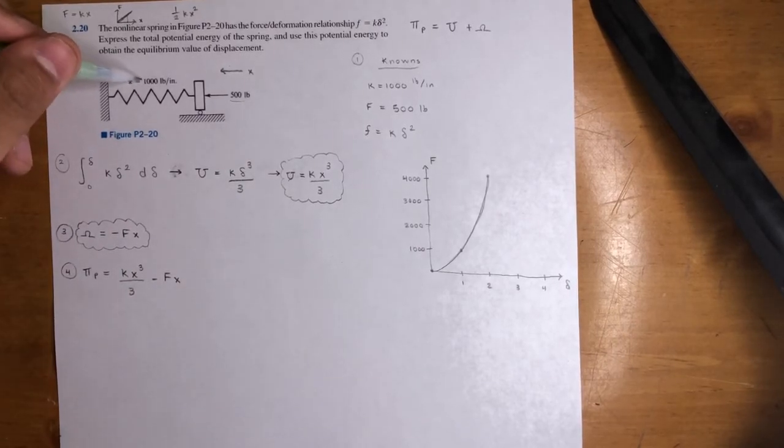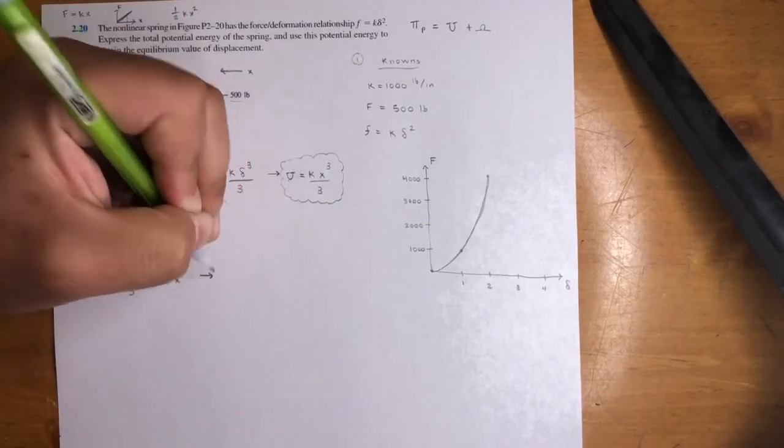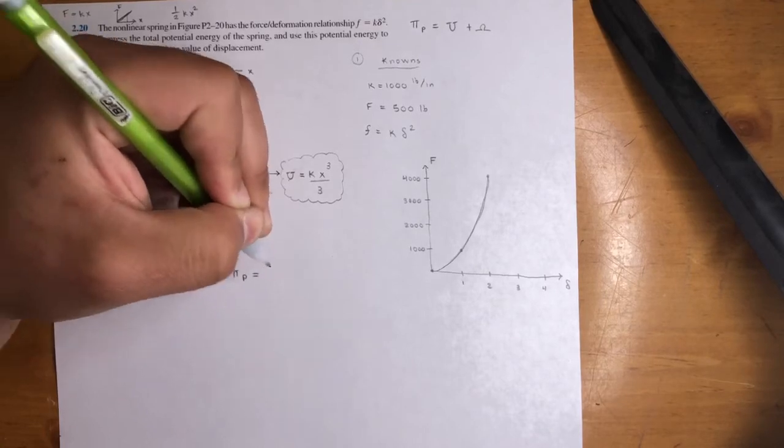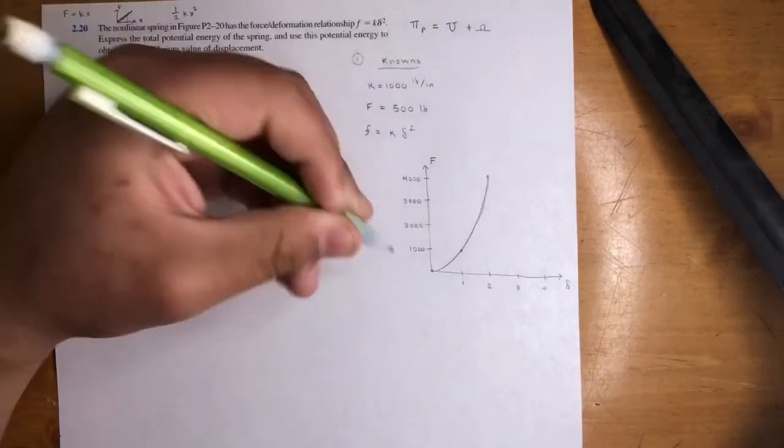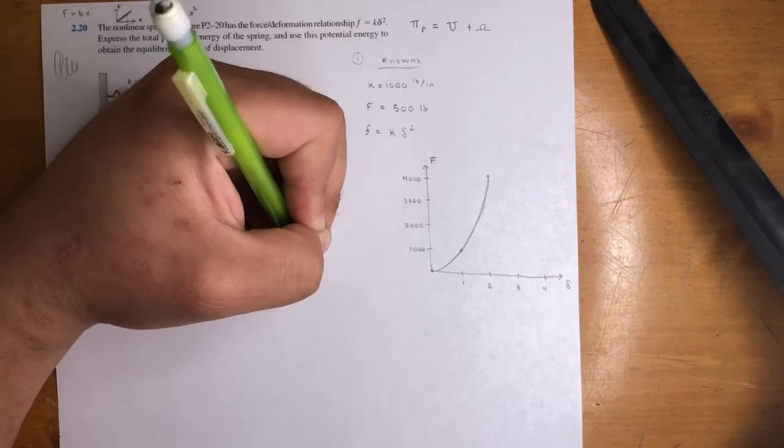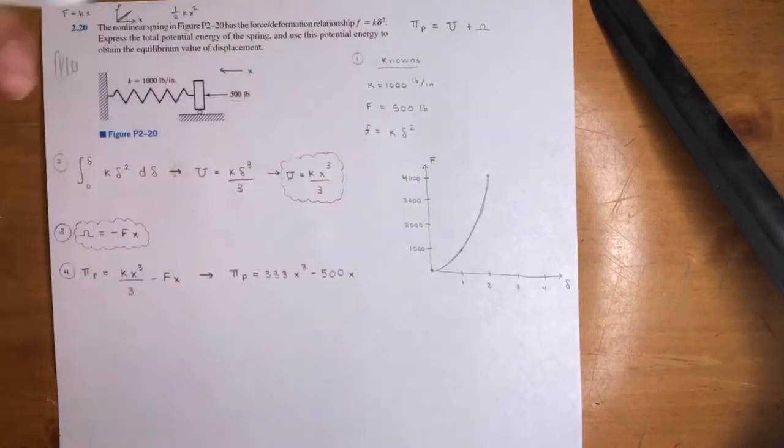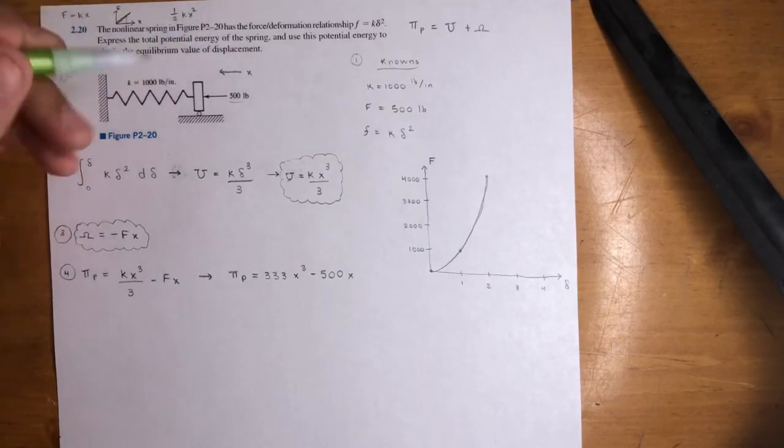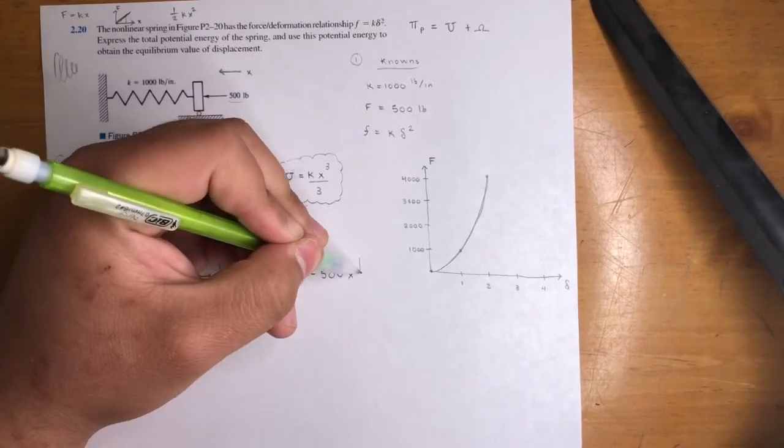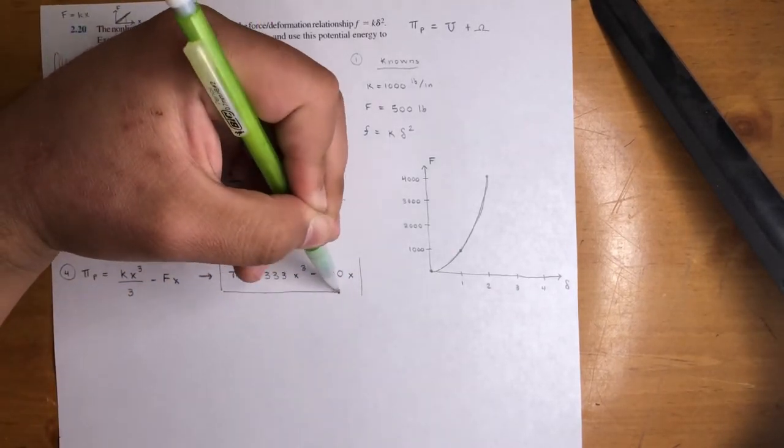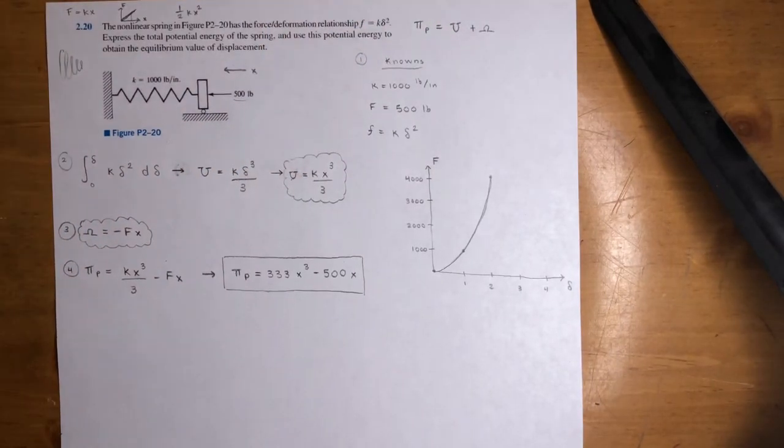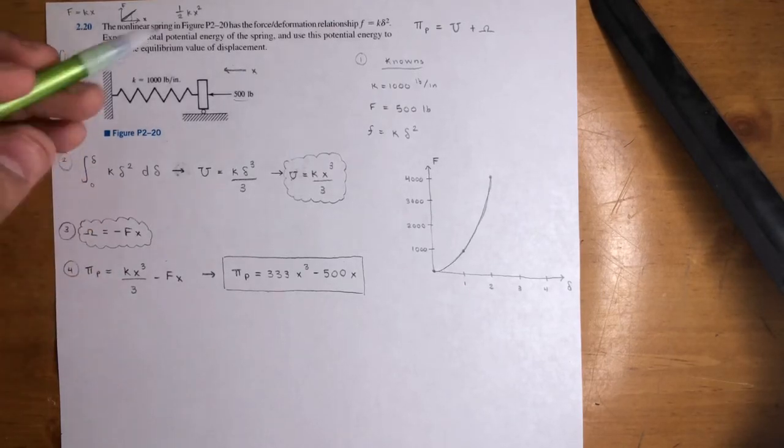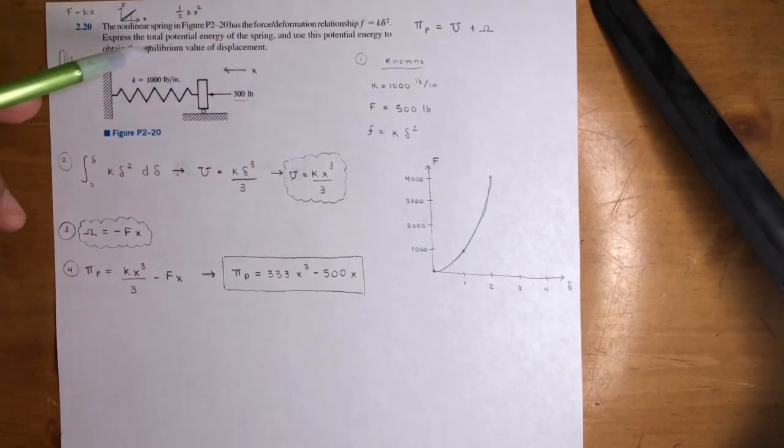This is straightforward. Cloud this up, we're going to need it. So that means pi p is equal to U plus omega, which is kx cubed over three minus f of x. All right, cool. So plug in the values. K is equal to 1,000 and 500 for force. We will get pi p is equal to, well, 1,000 divided by three, that's, I'm going to make it a nice 333 x cubed minus 500 x. So that's the answer. It says express the total potential energy of the spring. So this is it right here. That's the expression for the total potential energy of the spring due to internal strain energy U and then external forces.